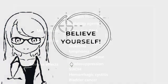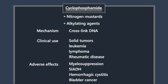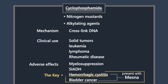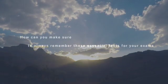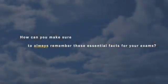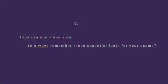The key point here is that cyclophosphamide causes hemorrhagic cystitis, and the crucial method to preventing it is using mesna. Now, how can you make sure to always remember these essential facts for your exams? I'll show you.